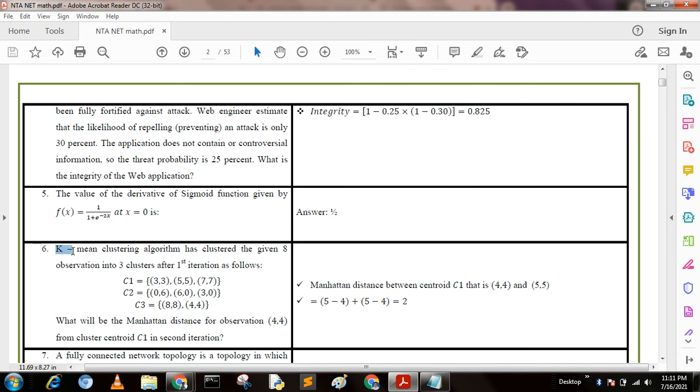Sixth question: K-means clustering algorithm has clustered eight observations into three clusters after first iteration: C1 = {3,3,5,5,7,7}, C2 = {0,6,6,0,3,0}, C3 = {8,8,4,4}.